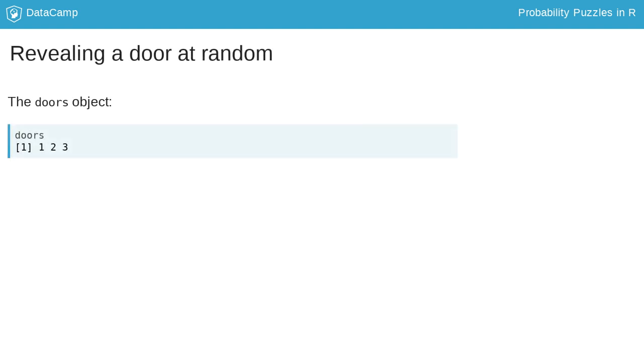In the previous slide, the initial choice and the prize door were different, leaving only one remaining door for the host to reveal, since the host will only reveal a door with no prize. If the initial choice is the same as the prize door, then there are two possible doors for the host to reveal. In this case, it must be random, which can be done using the sample function.